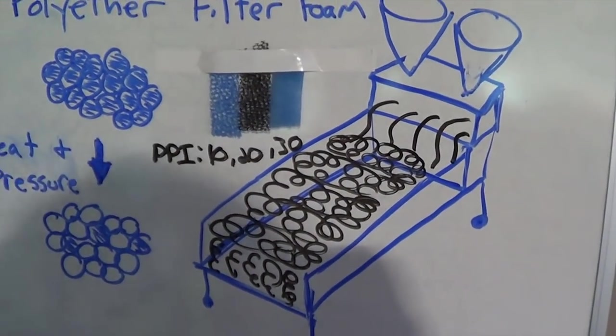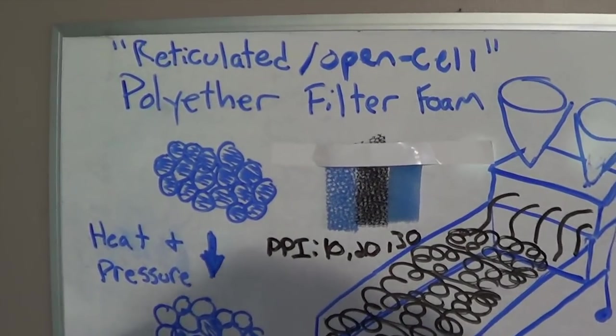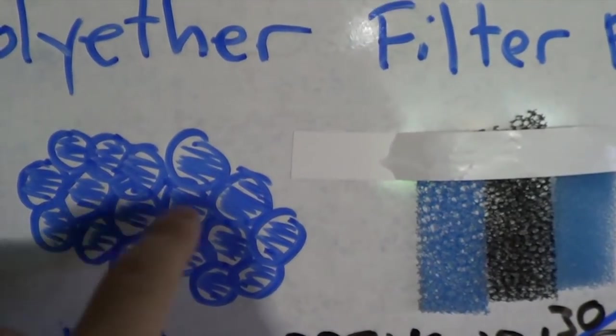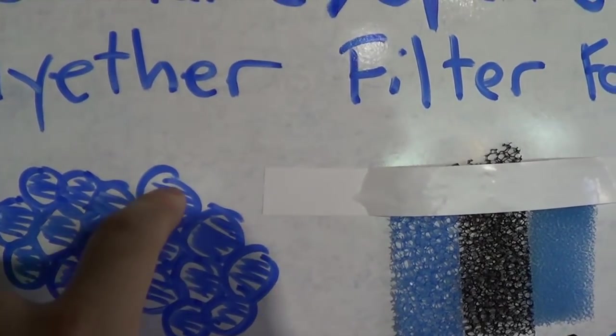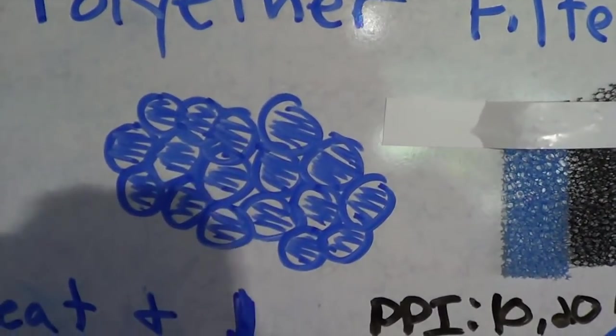However, most foams look something like this. They're actually complete encapsulated bubbles. There's an air pocket inside of each of these bubbles. That's called closed cell foam.